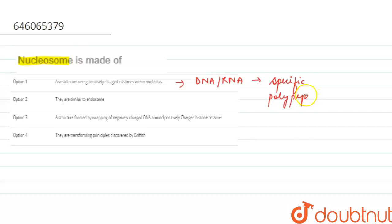Now the next option says they are similar to endosome. So now what are endosome? So we'll discuss each option one by one. When we are talking about endosome, always remember that these are the membrane bound vesicles which are formed by a process which is known as endocytosis. So this was about endosome.